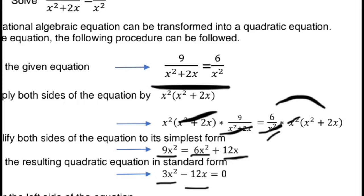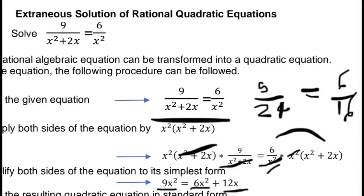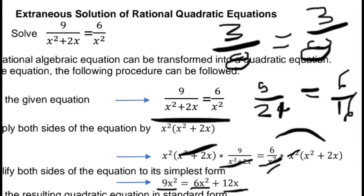You can get the solution from computation, but if you substitute it back, it will not make the equation true — that is what is meant by extraneous root or solution. If x equals 4: 4 squared is 16, plus 2 times 4 is 8, so 16 plus 8 is 24. This gives 9 over 24. The right side is 6 over 4 squared, which is 6 over 16. Simplifying the left side: 9 over 24 divided by 3 gives 3 over 8. The right side: 6 divided by 2 is 3, and 16 divided by 2 is 8, giving 3 over 8. Both sides are equal, so x equals 4 is a valid solution, not an extraneous one.